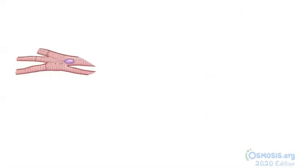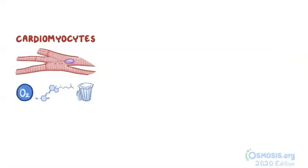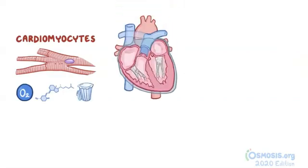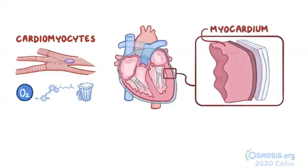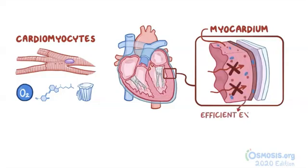The heart is a pump primarily made up of cardiac muscle cells known as cardiomyocytes, and like any other cell they require a steady supply of oxygen, nutrients, and a way to eliminate wastes. Although the heart is continually pumping blood throughout its chambers, the myocardium is too thick for diffusion to happen effectively, so the coronary circulation provides an efficient way for the exchange of substances to occur.